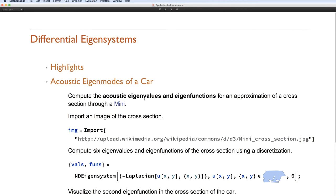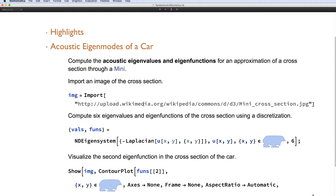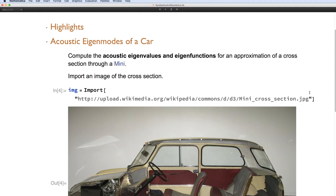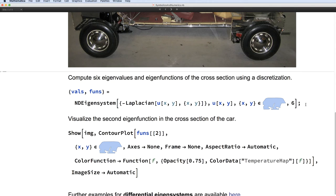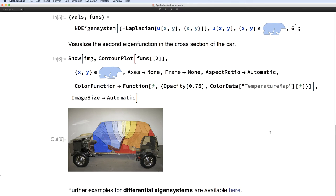Okay, so an example of this, let's try and compute the acoustic eigensystem functions for a mini. So I import the model. And when that's done, we'll simply discretize it like I do over here. Use ND eigensystem, and then I put everything together, and I get back the original car along with an eigenfunction on top.